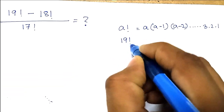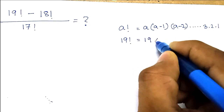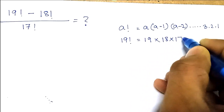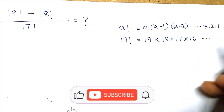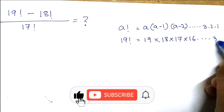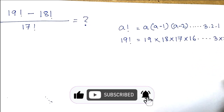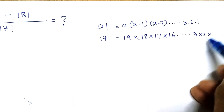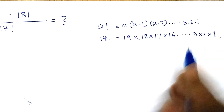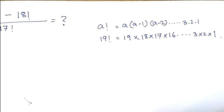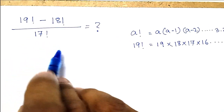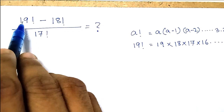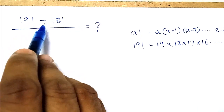So naturally, 19 factorial will be 19 into 18 into 17 into 16, and it will continue up to 3 into 2 into 1. To get the answer of this expression, we have to get the 19th factorial, then deduct 18th factorial, and then divide by 17th factorial.